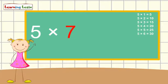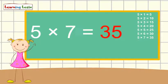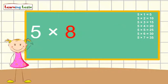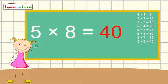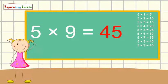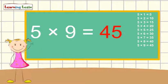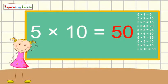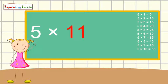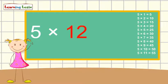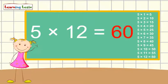Five times seven is thirty-five, five times eight is forty, five times nine is forty-five, five times eleven is fifty-five, five times twelve is sixty.